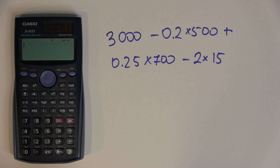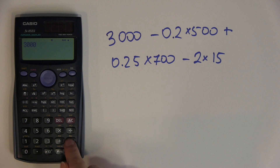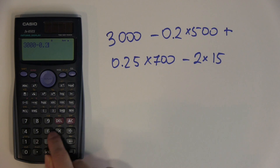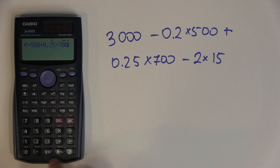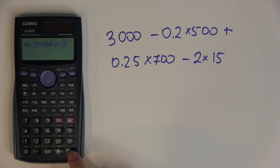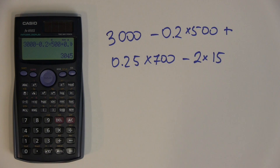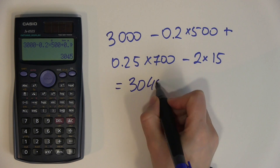With the scientific calculator, you can type the whole expression in one go and it automatically gives you the correct answer. So: 3000 minus 0.2 times 500 plus 0.25 times 700 minus 2 times 15. The answer is 3045.